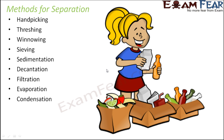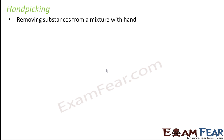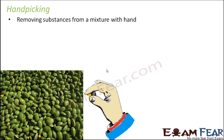For each method, we will see what kinds of substances they separate and look at the pros and cons. Let's start with hand picking — the name itself defines it. Hand picking means removing substances from a mixture with your hand. It is a purely manual process.